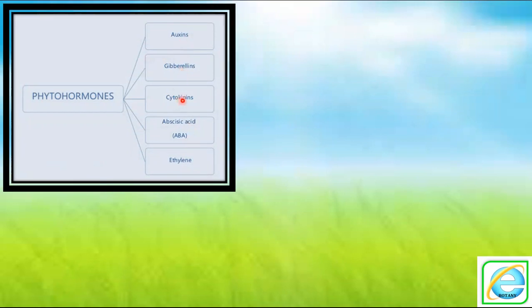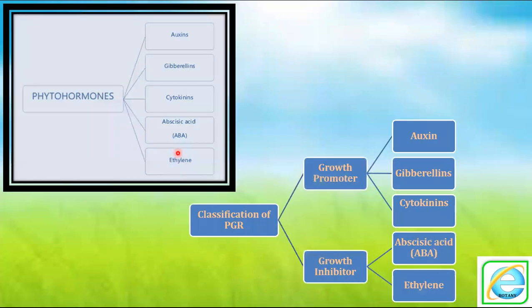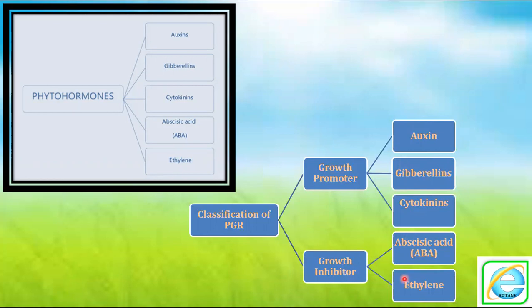There are five kinds of phytohormones: auxin, gibberellins, cytokinin, abscisic acid, and ethylene. These five phytohormones are present in plants and get classified into two categories — growth promoters and growth inhibitors. Out of these five hormones, three are growth promoters: auxin, gibberellins, and cytokinin. The remaining two — abscisic acid and ethylene — are growth inhibitors.